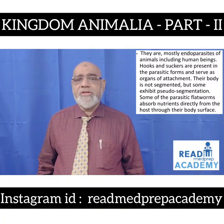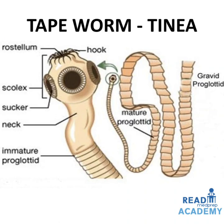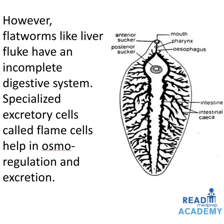Some of the parasitic flatworms absorb nutrients directly from the host through their body surface. In this image you can see Taenia, otherwise called the tapeworm — it has a head with a rostellum bearing hooks, and a scolex with suckers mostly four in number. They have a neck; near the neck the proglottids are immature, and as it progresses the tapeworm has gravid proglottids which are mature. However, flatworms like liver fluke have an incomplete digestive system. Specialized excretory cells called flame cells help in osmotic regulation and excretion.